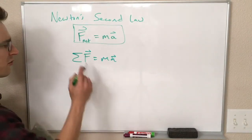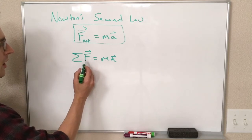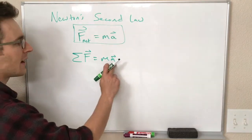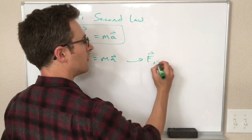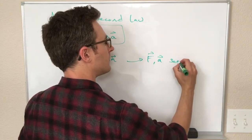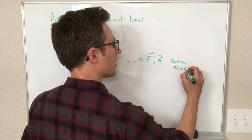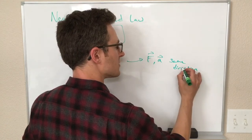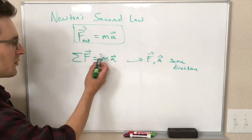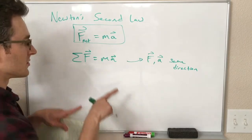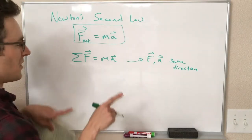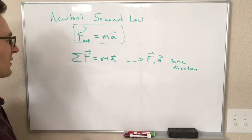Because these are vectors, F and a have to be in the same direction. That's just a property of vector equations. If one side is a vector, the other side is the same vector. So they have to be pointing in the same direction if they're the same thing.